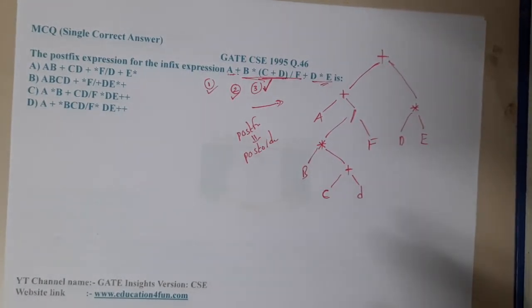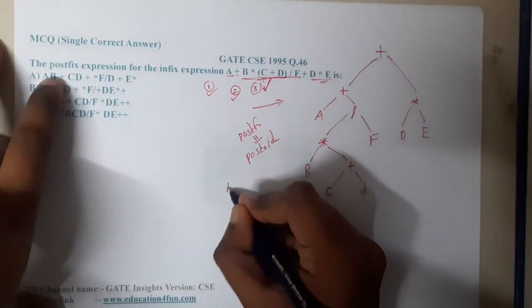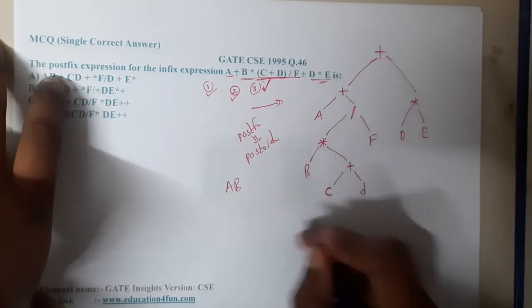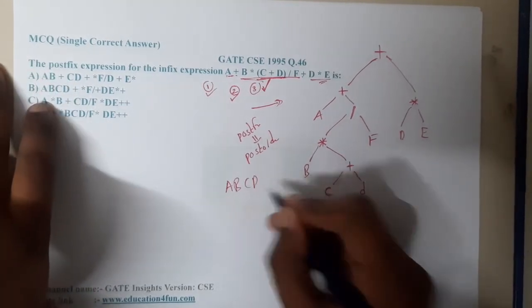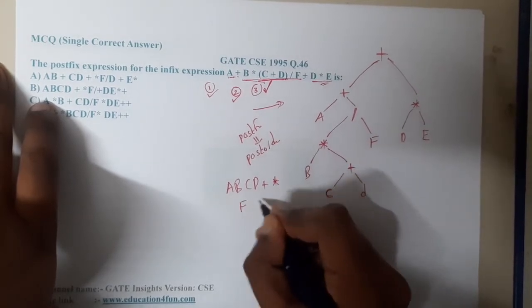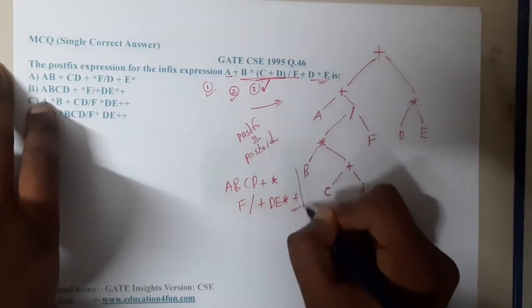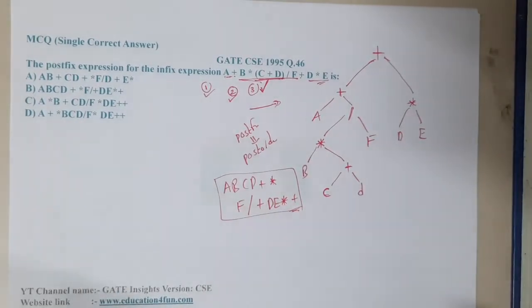If you recall what did I say - first A, after that B, after that C, after that D, after that plus, after that star, after that F, slash, plus, D, E, star, plus. So this is the post order.